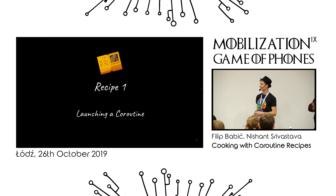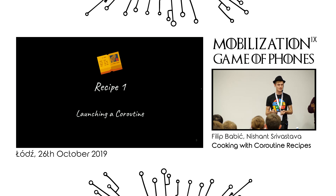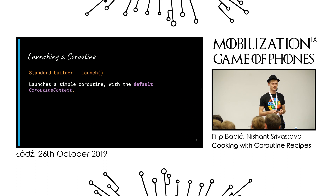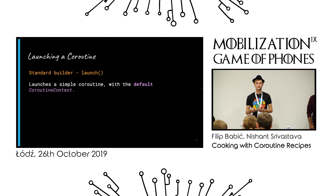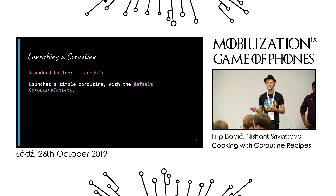The default thing you want to know when using coroutines is how to launch them. You can't really use coroutines unless you launch them. The coroutines context is like a set of rules your coroutines use — it defines the way coroutines behave: when they run, which thread they run on, and how they handle exceptions.